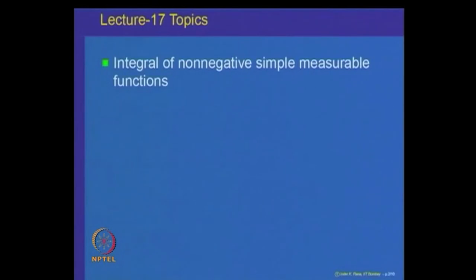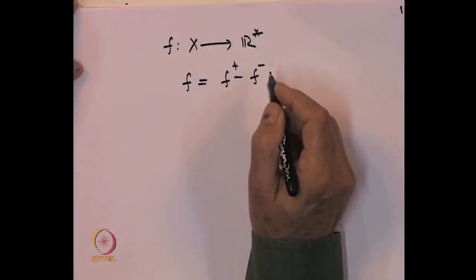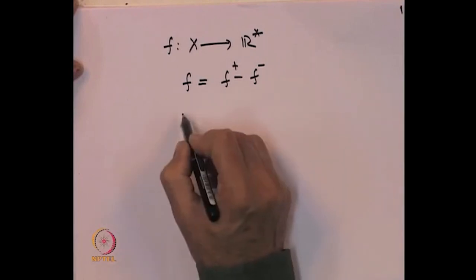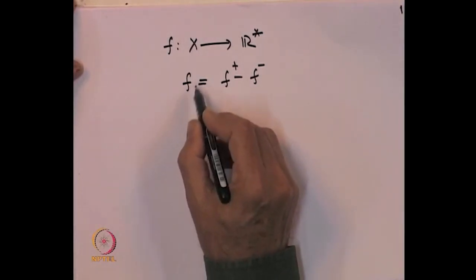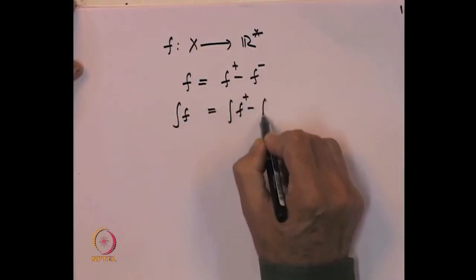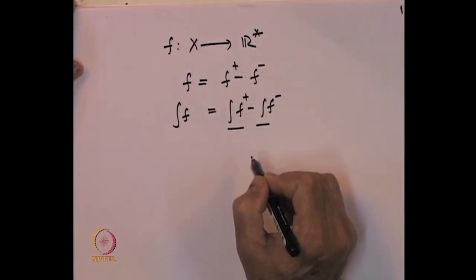The basic idea is we want to define the notion of integral for a function f defined on a set x taking values in R star. For a function f, we can represent f as the positive part minus the negative part. The advantage is that f-plus and f-minus are both non-negative functions. Integration being a linear process, the integral of f equals the integral of f-plus minus the integral of f-minus. So it is enough to define the notion of integral for non-negative functions.